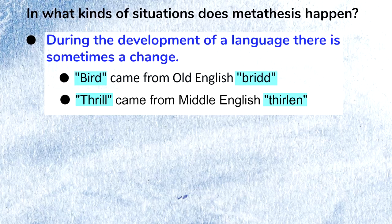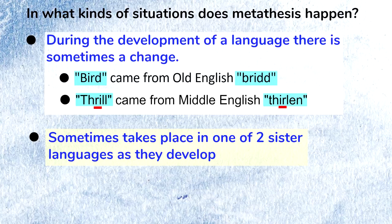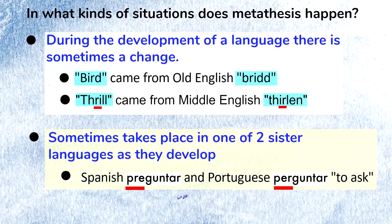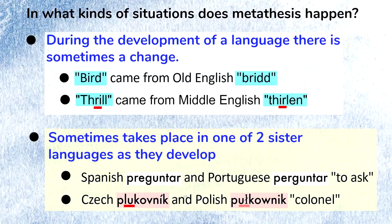The R and the vowel switched positions. Second, metathesis sometimes takes place in one of two sister languages as they develop. For example, there's Spanish and Portuguese, which both mean 'to ask'. And there's the Czech word and the Polish word, which both mean 'colonel', as in the military rank.